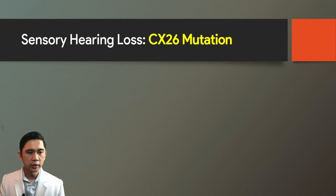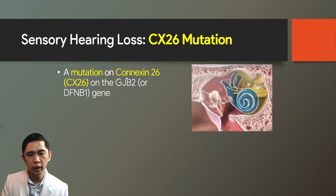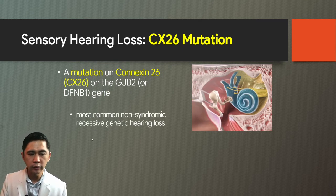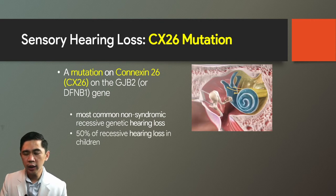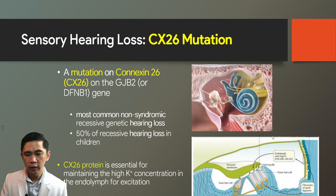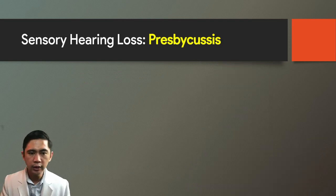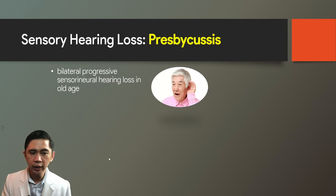Sensorineural hearing loss can be congenital and non-syndromic or acquired, such as presbycusis, noise-induced hearing loss, and acoustic neuroma. Sensory hearing loss with a CX26 mutation is secondary to a mutation in the Connexin 26 protein on the GJB2 gene—the most common non-syndromic recessive genetic hearing loss, accounting for 50% of recessive hearing loss in children. The CX26 protein is essential to maintain the high potassium concentration in the endolymph needed for excitation by the stria vascularis.